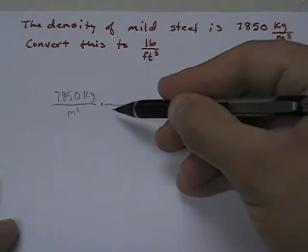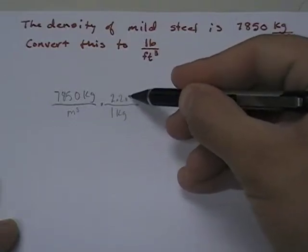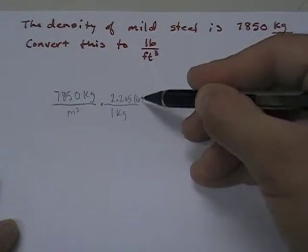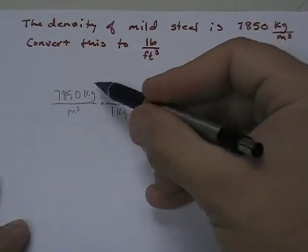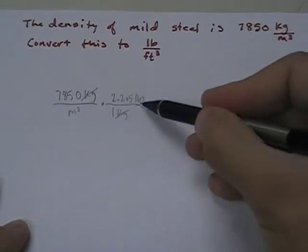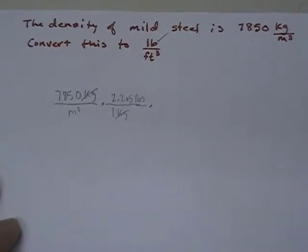What do I know about kilograms? I know that one kilogram is 2.205 pounds. So that'll take care of kilograms. Kilograms goes away and I have pounds on top. I like to come up here and put a little check mark. I've got pounds. Now I need cubic feet.